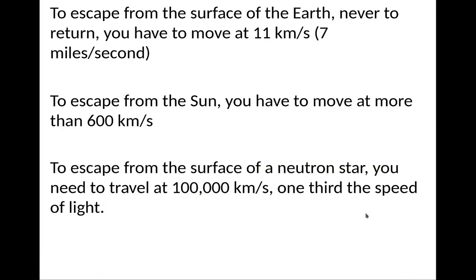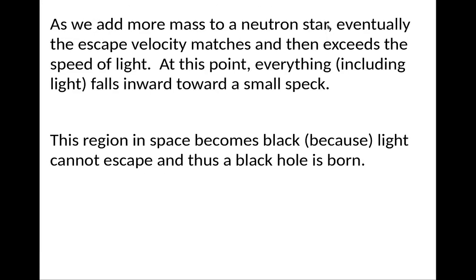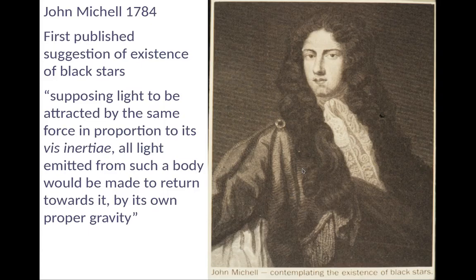So to escape from a star, you have to reach what's called the escape velocity. To escape from the surface of the Earth, you have to move roughly about 11 kilometers a second, about seven miles a second. To escape from the sun, you have to move something close to 600 kilometers per second. To escape from the surface of the neutron star, you have to travel about 100,000 kilometers per second, basically one-third speed of light. So you add more and more mass to the neutron star, the escape velocity will eventually match and then exceed the speed of light. At that point, because nothing can exceed the speed of light, everything including light falls inward toward basically the central object called a black hole. So the region of space becomes black because light cannot escape and thus a black hole is formed.